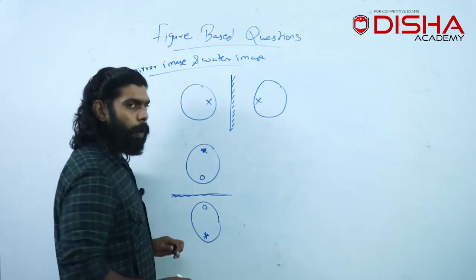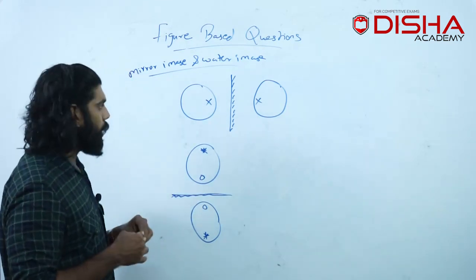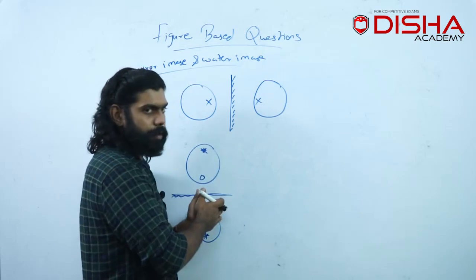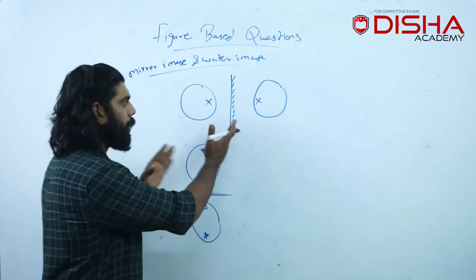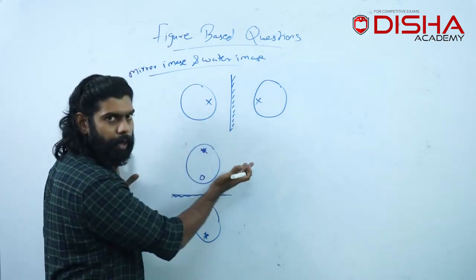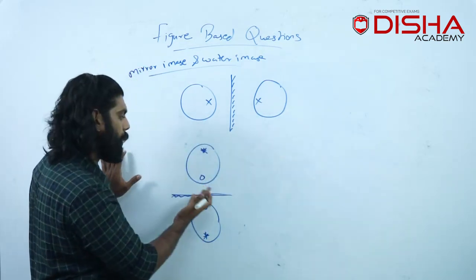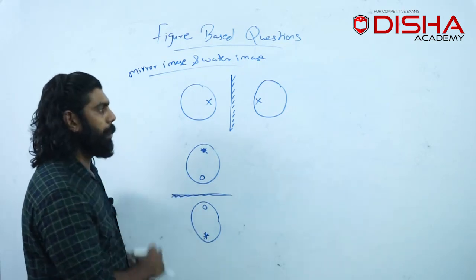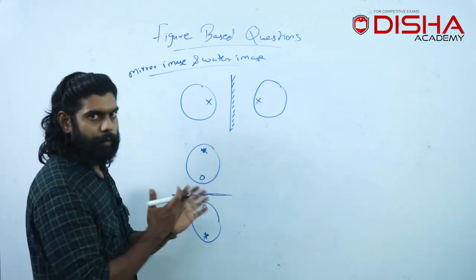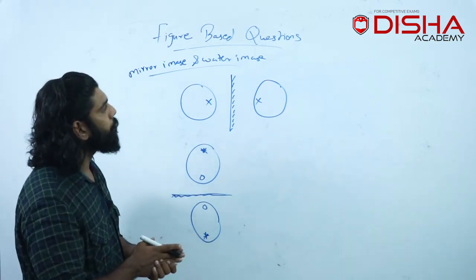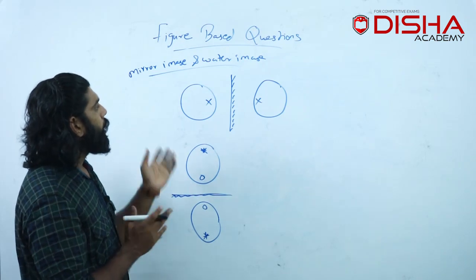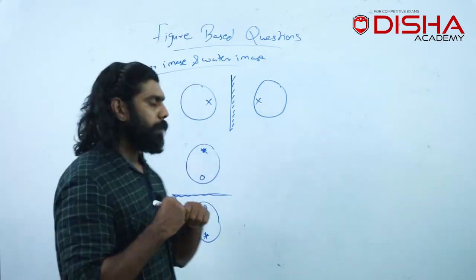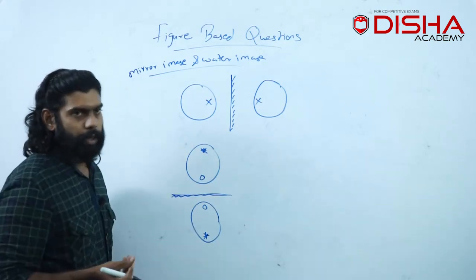This is the water image. If you don't have a clear water image, you can see the water image on the left and right side. You can see the water image on the bottom position. This is how you see the water image on the left and right side.